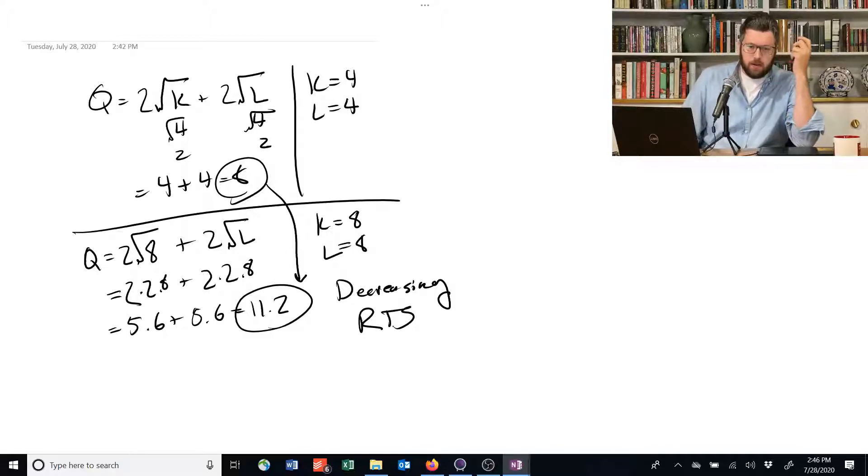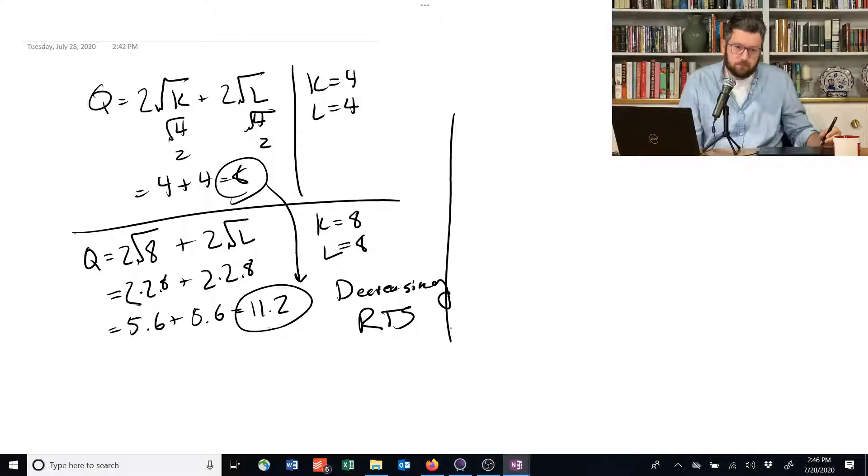And in general, plugging numbers in is a simple way to see if something has increasing, decreasing, or marginal returns to scale. But a more foolproof, sophisticated way to do it is to instead, instead of putting in exact numbers, use a proportion. So let me show you.